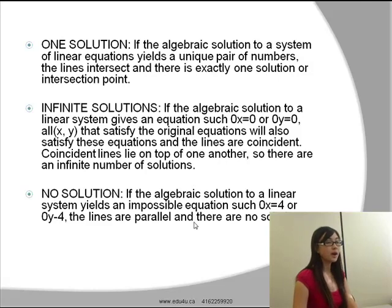If the algebraic solution to a linear system yields an impossible equation such as 0x=4, the lines are parallel and there are no solutions.